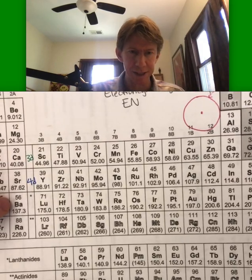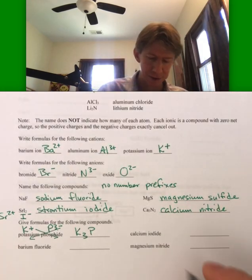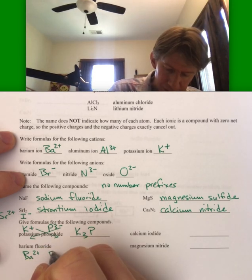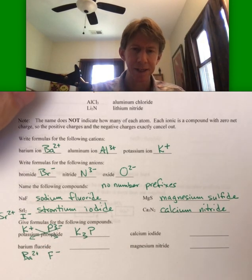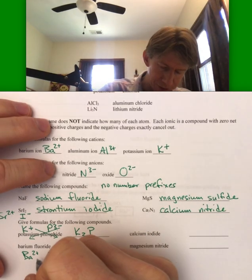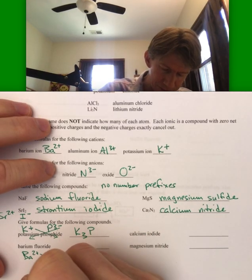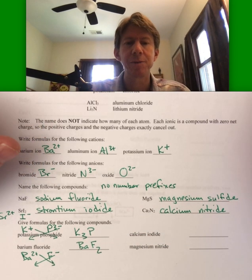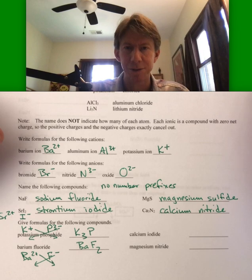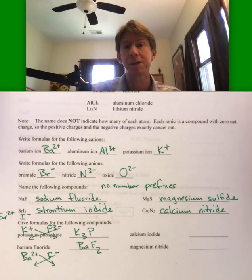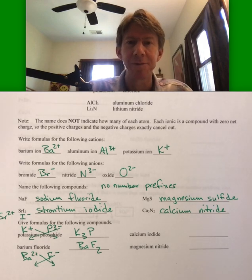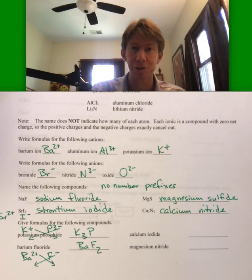Barium fluoride — barium is in the second column, so it's going to be barium two plus, fluoride minus. Bring them down, or crisscross them, and the formula for barium fluoride is BaF2. This is going to be important — the more nomenclature you know, the more helpful it is for this and all your chemistry courses. Many CHEM 400 classes have a nomenclature quiz in the first couple of weeks.